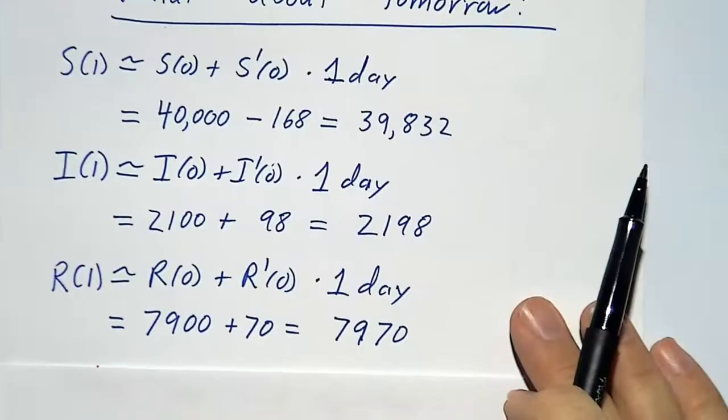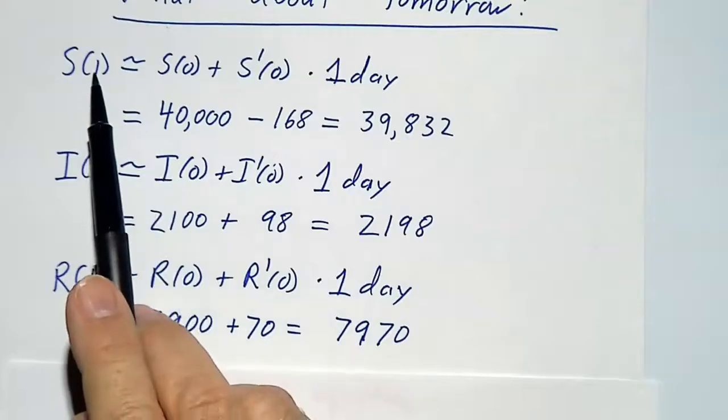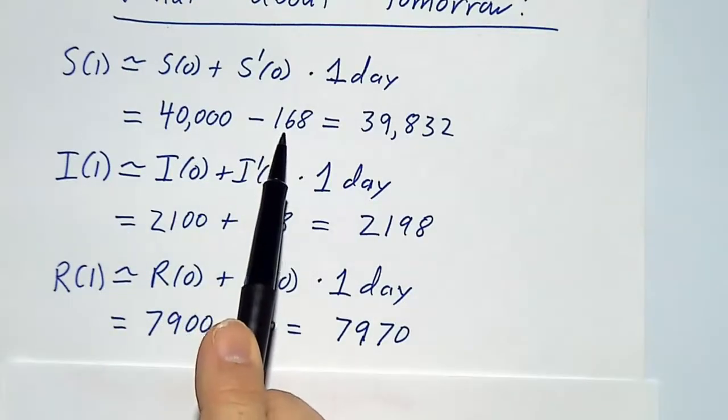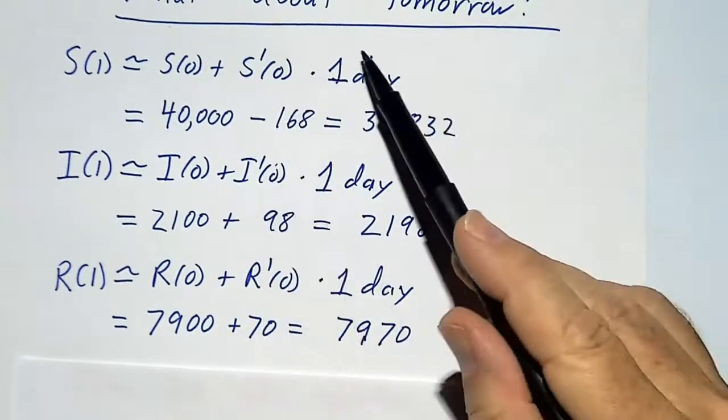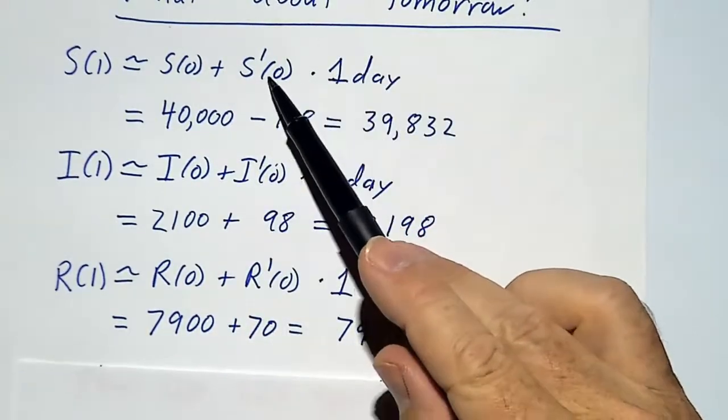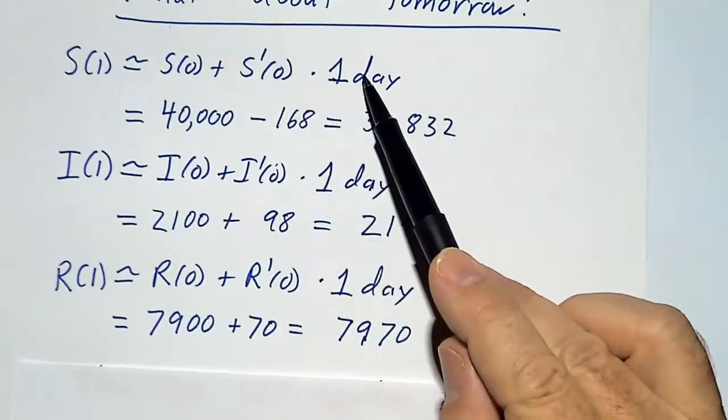Now, this is doing things one day at a time. We could have done things two days at a time. If we did things two days at a time, we would say S two days from now is 40,000 minus 168 times 2. But we're doing things one day at a time. So we always multiply the rate by the time, and the time is one day. And multiplying by one is pretty easy.